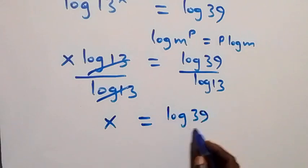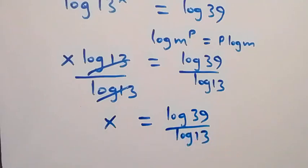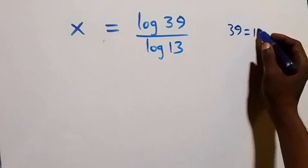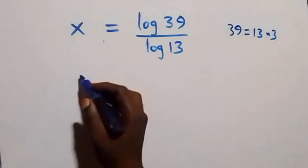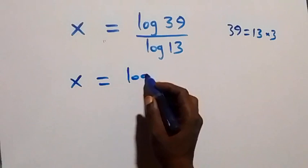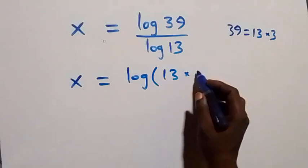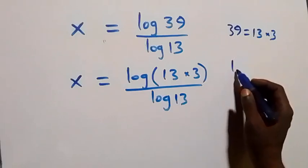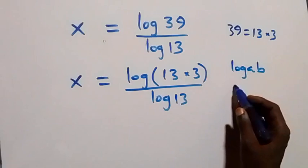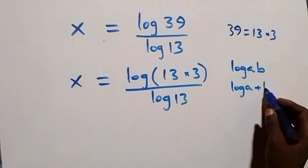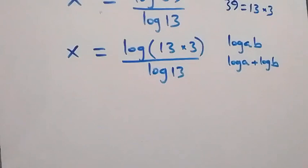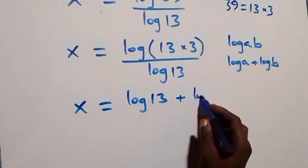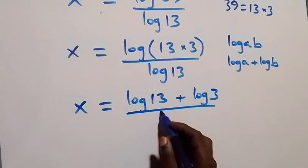We can simplify this further. We write 39 as 13 times 3, so x equals log(13 times 3) over log 13. Applying the product law of logarithms — log(a times b) equals log a plus log b — this becomes x equals (log 13 plus log 3) divided by log 13.